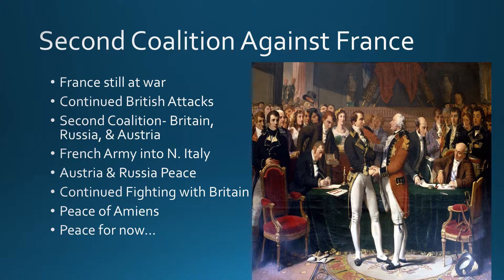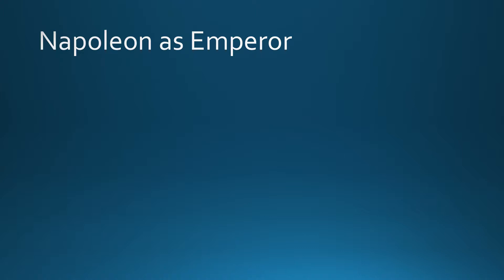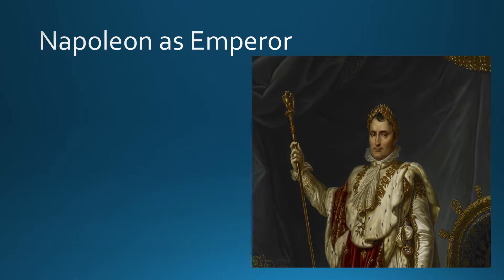Here is Napoleon signing this peace. Perhaps more important to look at — as we've been looking at changes occurring during the French Revolution — is how France is going to change under Napoleon. As you can see from the title, he's going to establish himself as emperor.